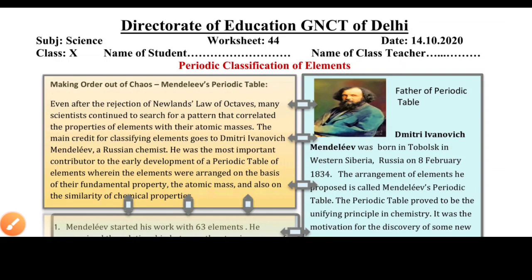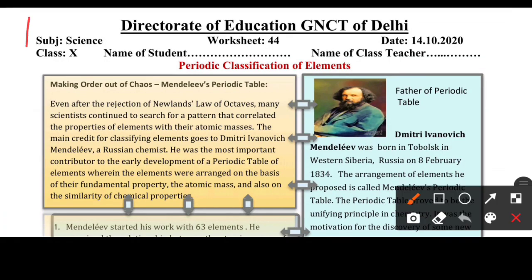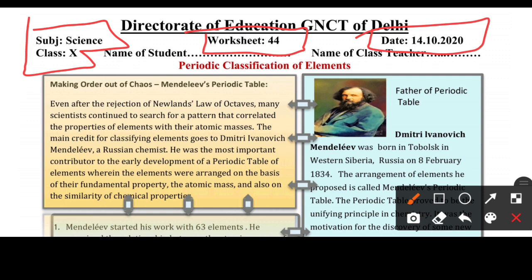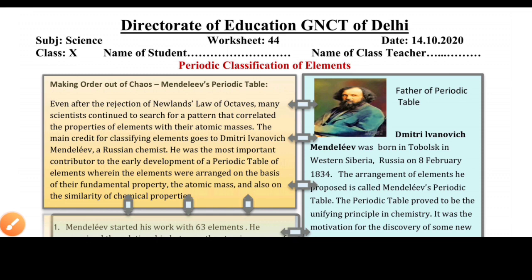Hello my dear students, welcome to my YouTube channel. Today we will do Class 10 Science Worksheet No. 44, which you will get on the 14th of October. Our topic is Chapter No. 6, Periodic Classification of Elements. In the previous worksheet we had read Döbereiner's Triads and Newlands' Law of Octaves.